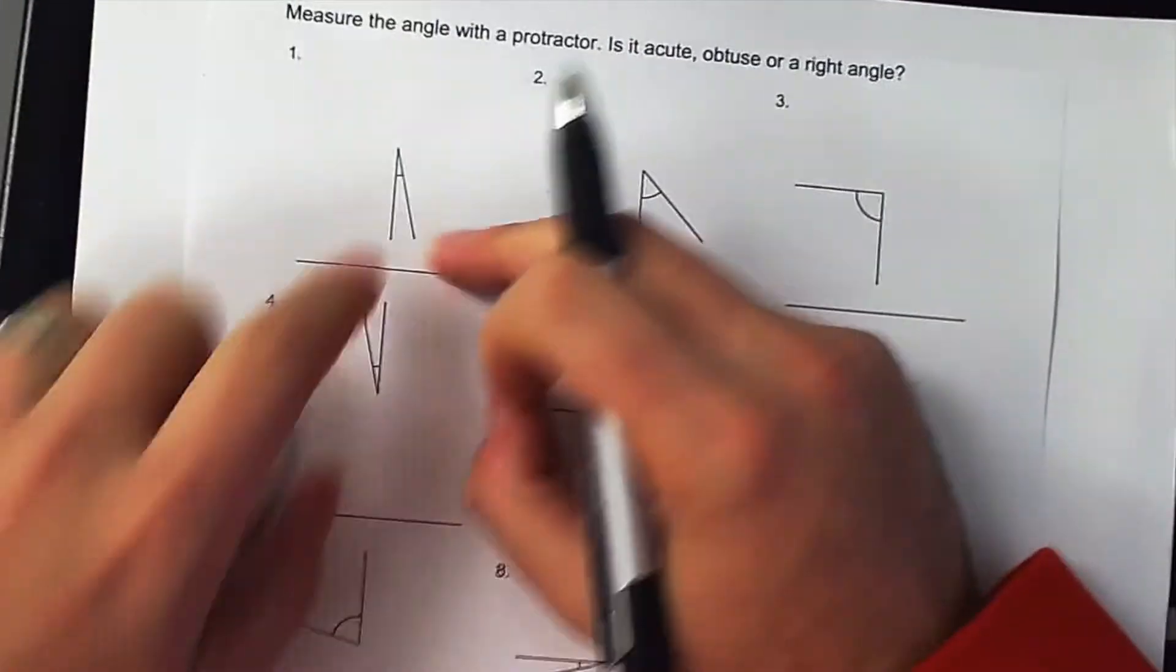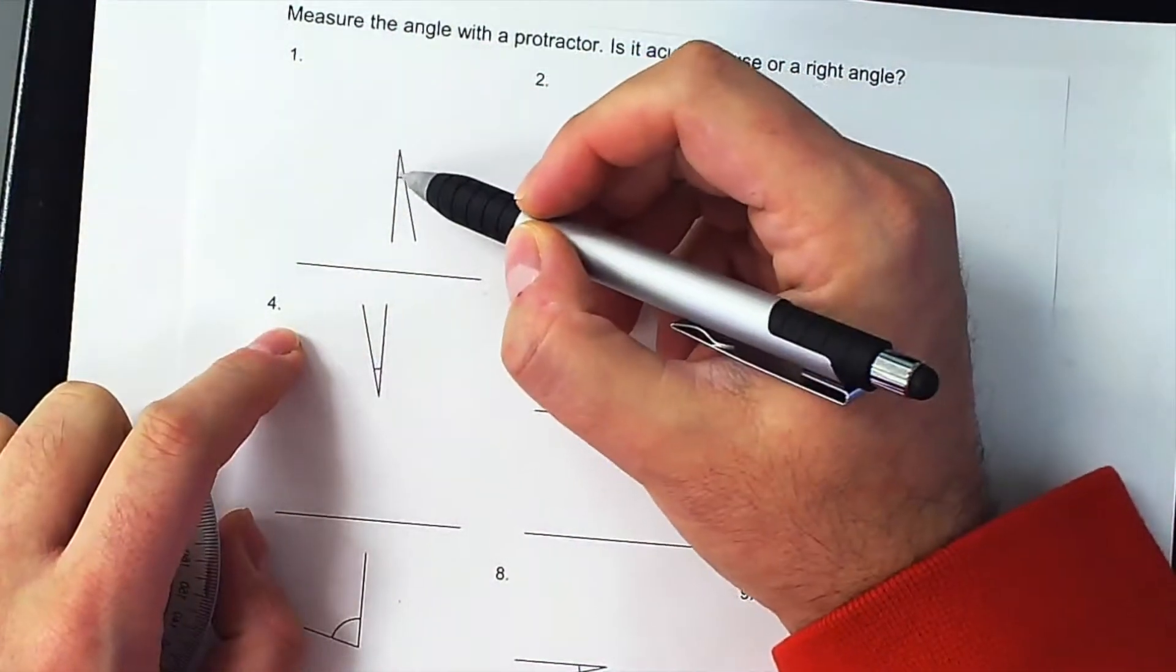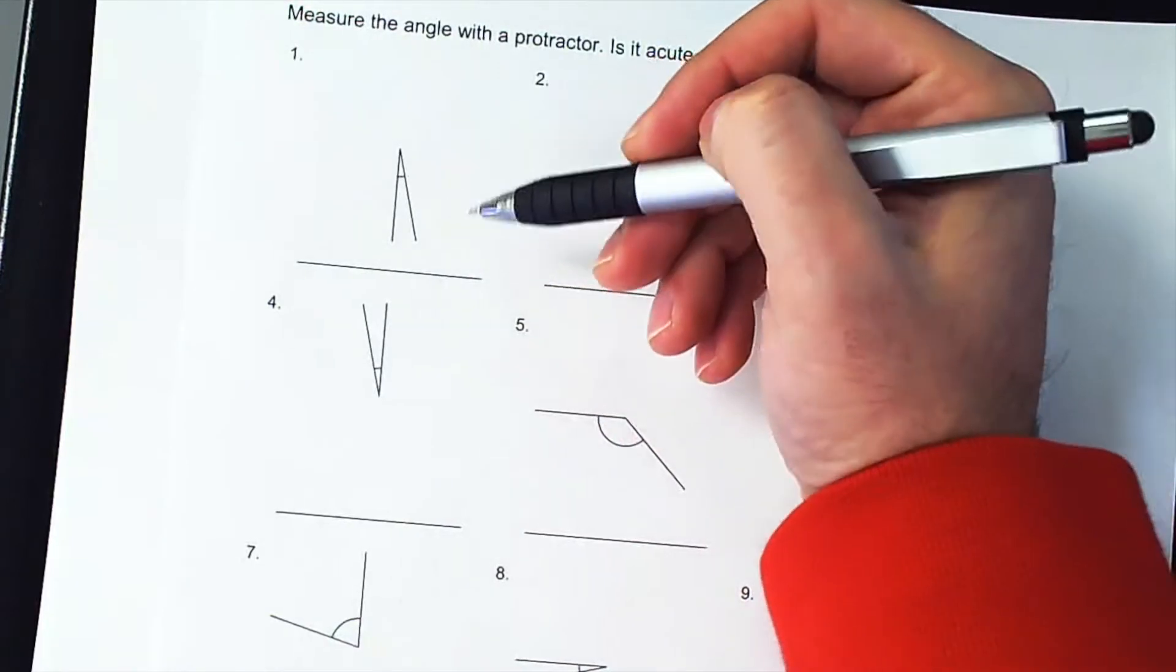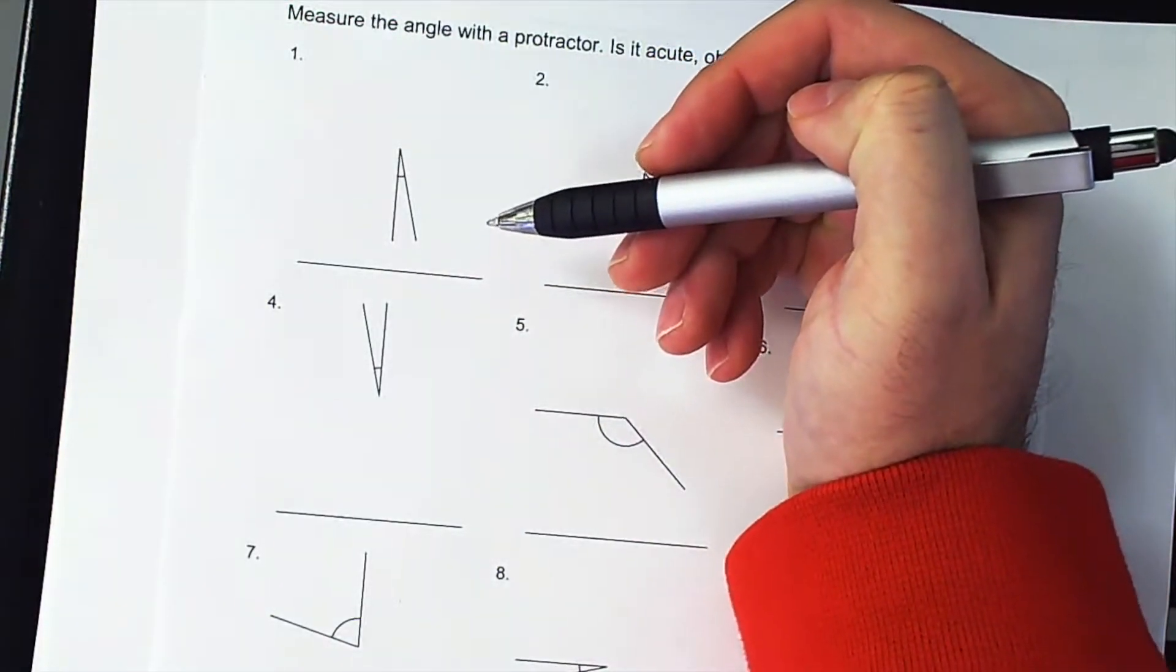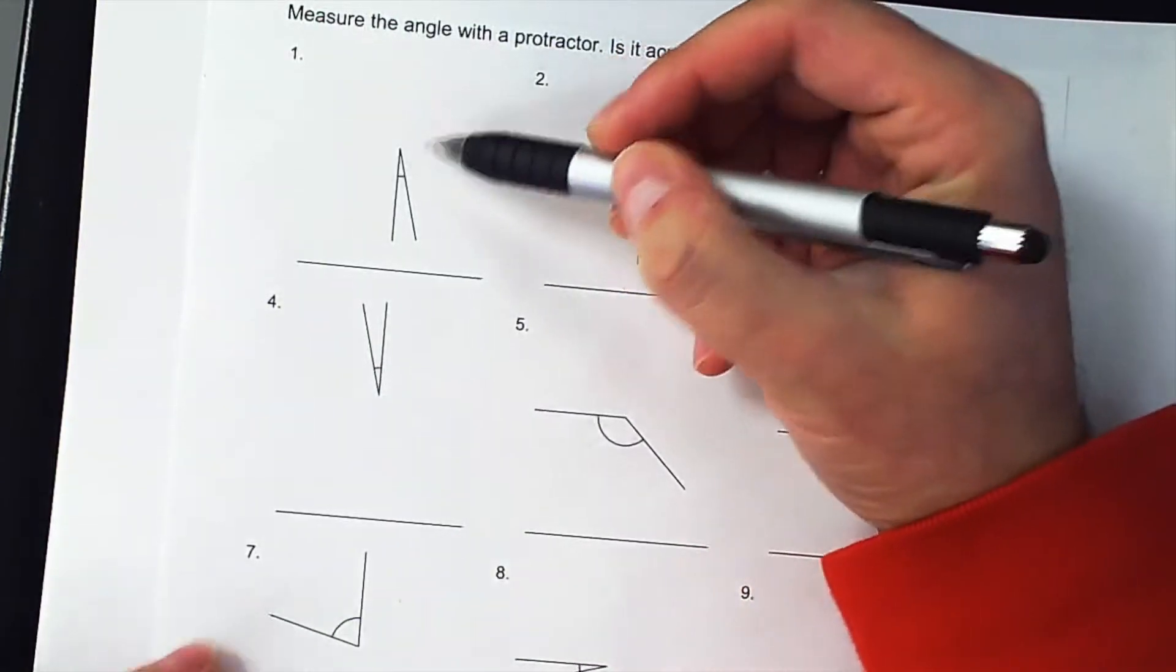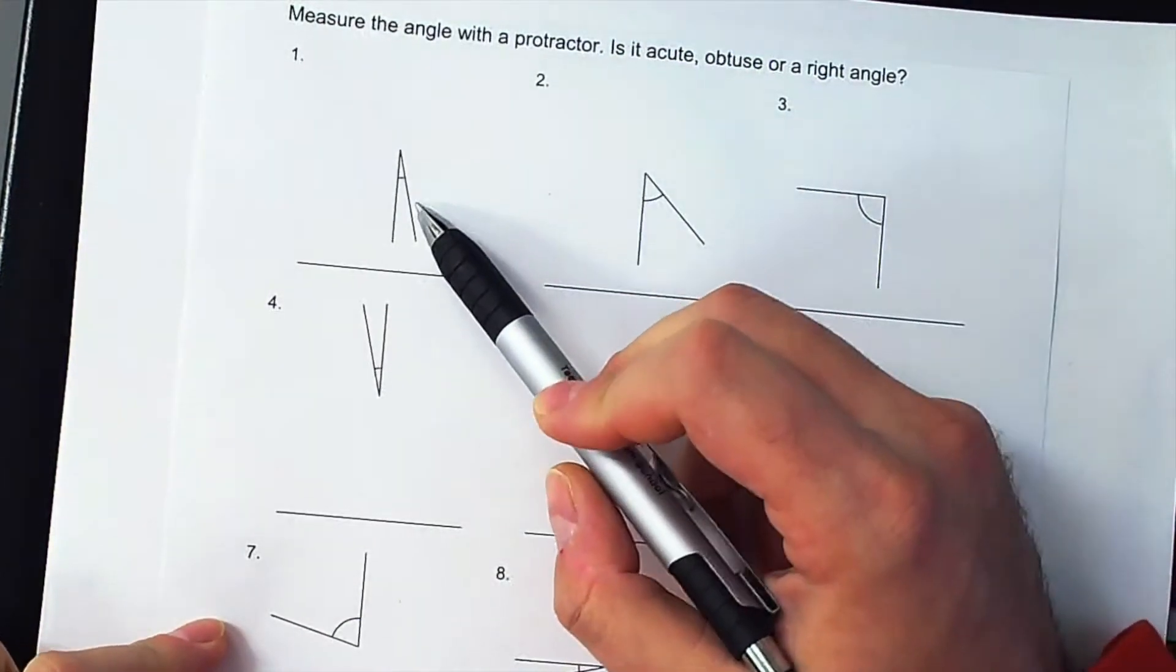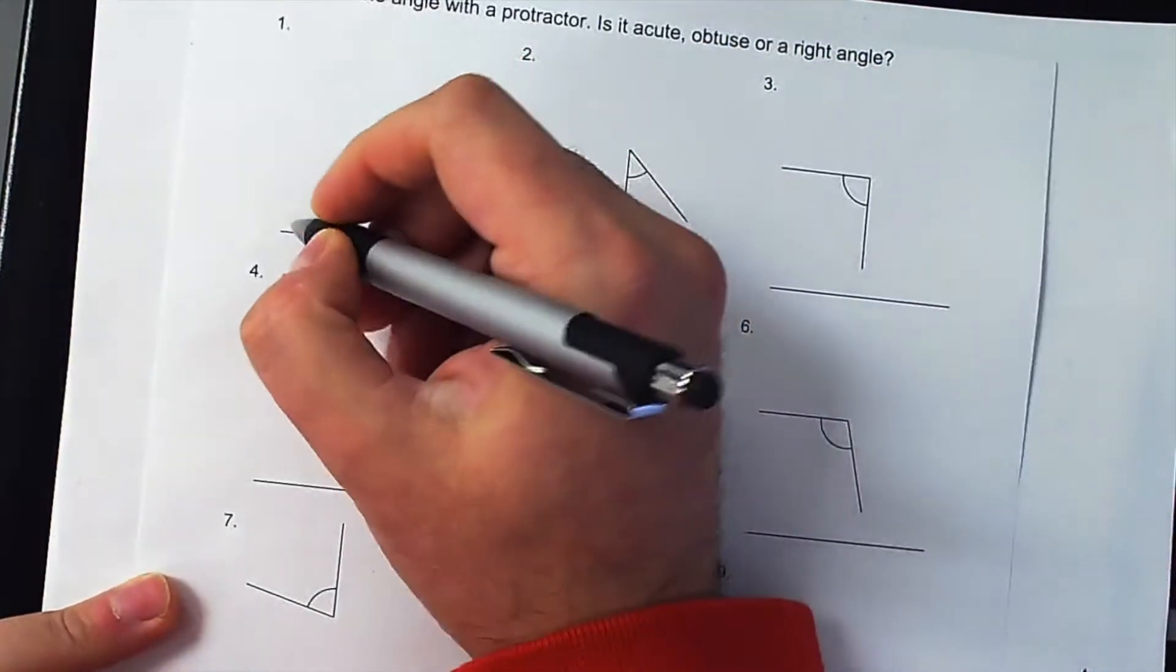First thing that you should do is look at the angle. The first angle is right here and the angle that you measure is right in here. The first thing you need to do is ask yourself is this an acute angle, a right angle, or an obtuse angle? And looking at this, what kind of angle is it? It's an acute angle. So I would write down acute.